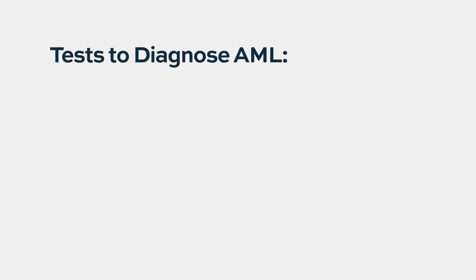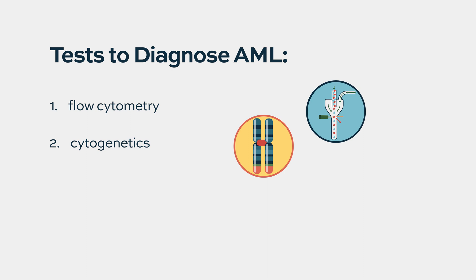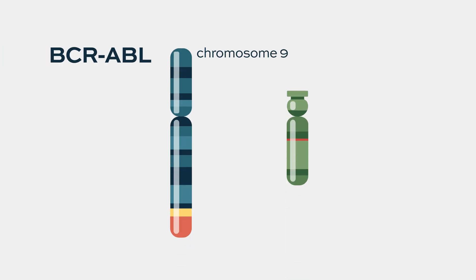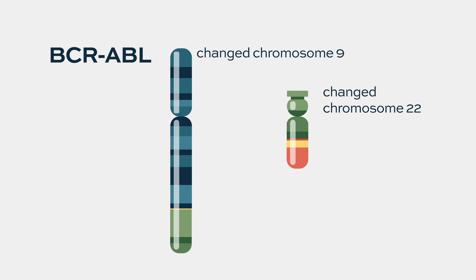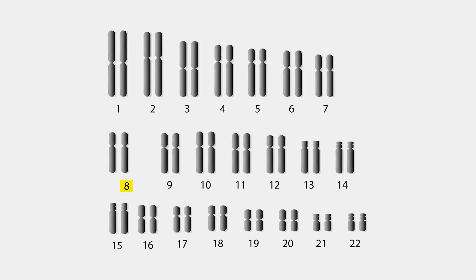The next step is molecular testing, starting with chromosome analysis — so-called cytogenetics — which is still very useful. We look at chromosomes, changes in chromosomes, breaks, and fusions. For instance, BCR-ABL, two genes that are fused, gives rise to a 9;22 translocation found in chronic myeloid leukemia but also in some acute myeloid leukemias. Other abnormalities include trisomy 8, where chromosome 8 is present in three copies, losses of pieces of chromosome 5 and 7, or entire loss of chromosomes 5 and 7.